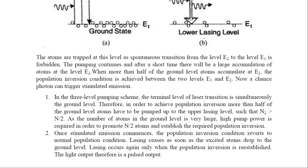Lasing occurs again only when the population inversion is re-established. The light output is therefore a pulsed output. In the case of a three-level laser, the laser output is a pulsed output — laser pulses will come out from the active medium. Thank you.